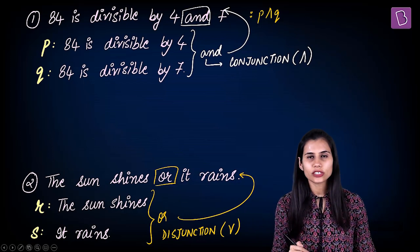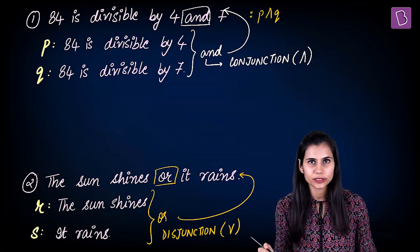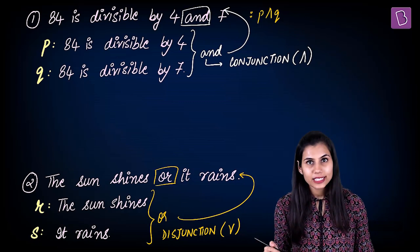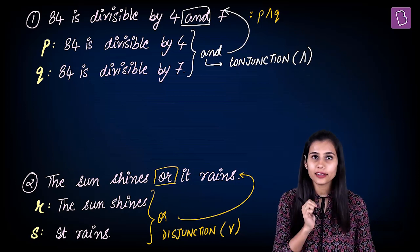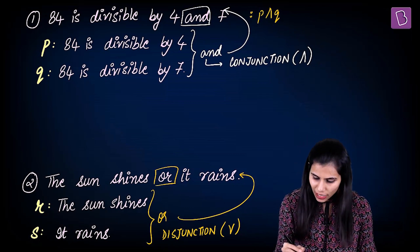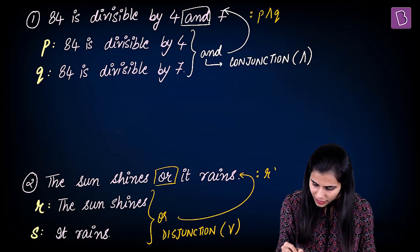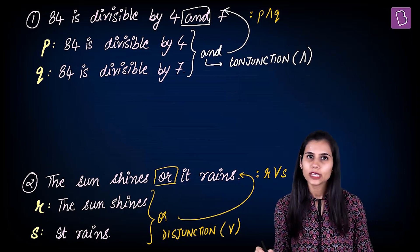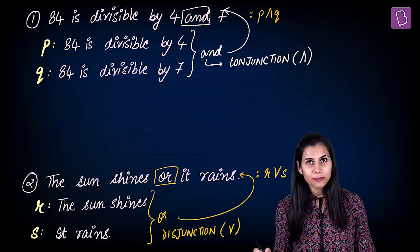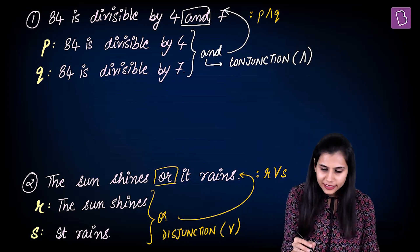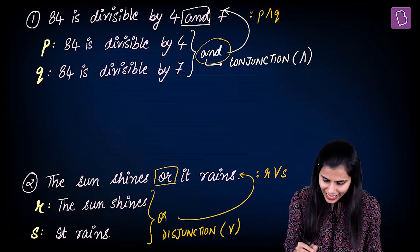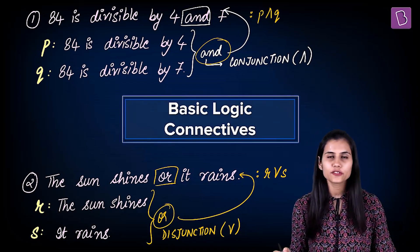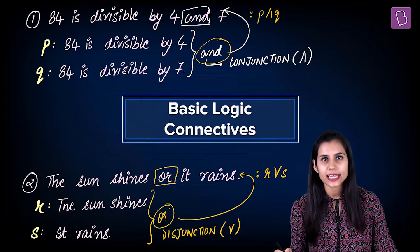So ∧ is conjunction; you invert it and you get disjunction (∨). We say the given compound statement is a disjunction of R and S, written as R ∨ S. Please keep in mind that both AND as well as OR are called basic logic connectives, or simply connectives.